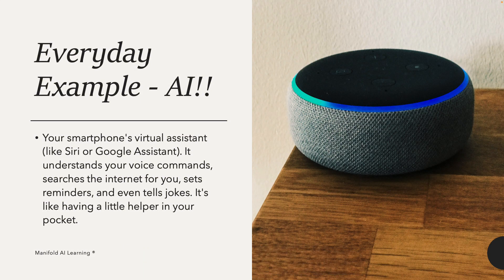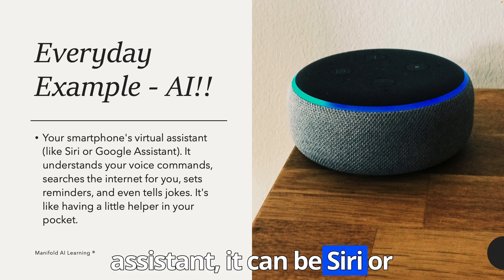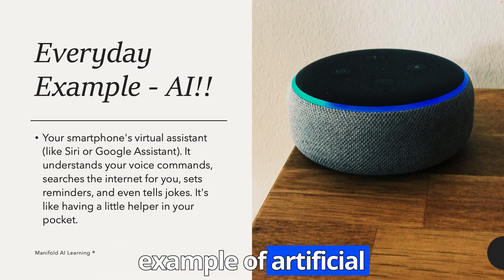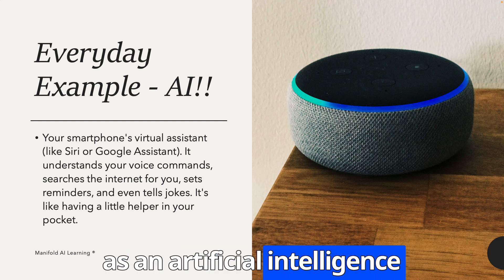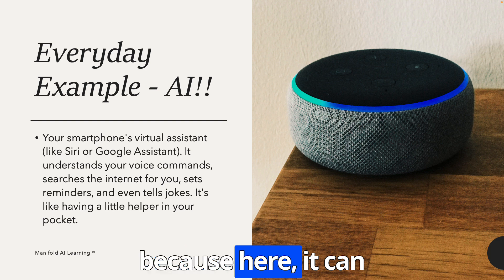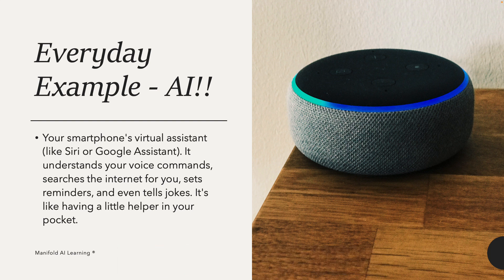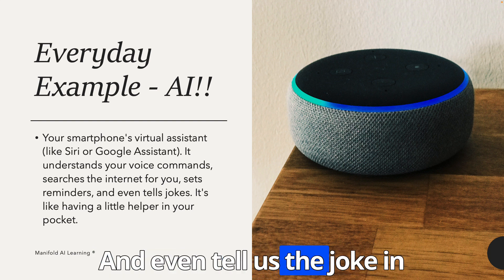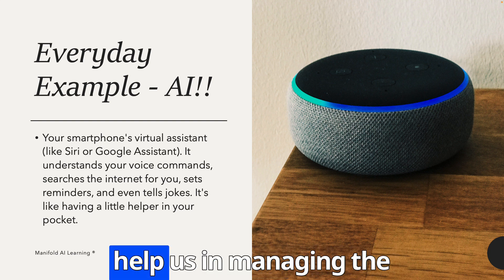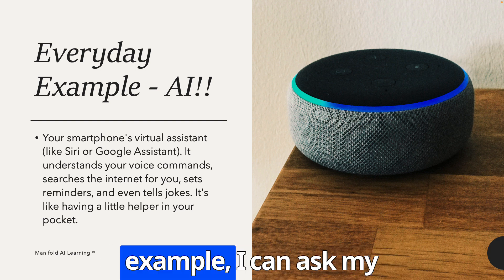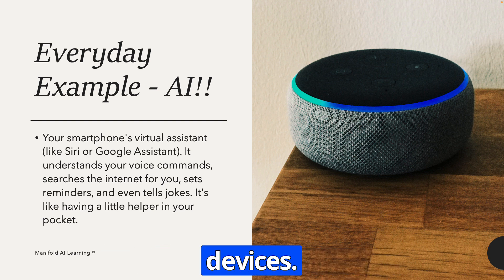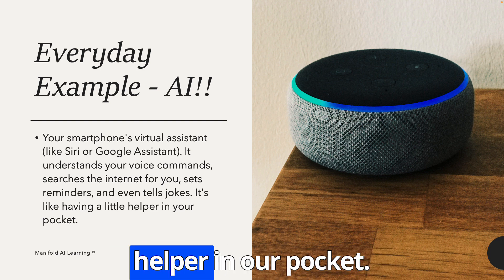Your smartphone's assistant — it can be Siri, Google Assistant, or even devices like Alexa — that's an example of artificial intelligence. We call these virtual assistants AI because they can understand your voice commands. Once they understand the command, they can search the internet, set reminders, tell jokes, and even manage smart devices. For example, I can ask Alexa to switch on the TV or the lights — it's like having a little helper in your pocket.